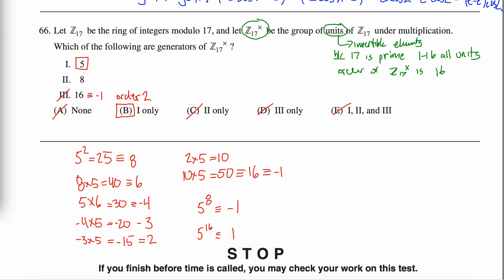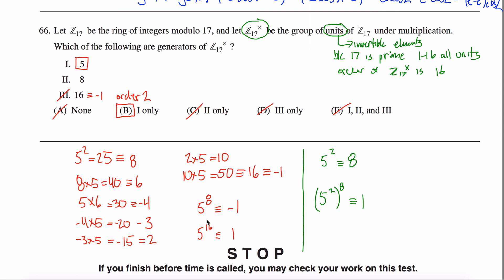As a bonus, I don't even have to check 2, though I could. Remember that 5 squared is equivalent to 8, and 5 to the 16th — which equals (5 squared) to the 8th — equals 1. But 5 squared is 8, so really 8 to the 8th power is equivalent to 1. That means the order of 8 is at most 8, so it can't possibly be a generator since its order isn't 16. But I didn't even need to figure that out, since checking 5 and 16 was enough to deduce the answer.